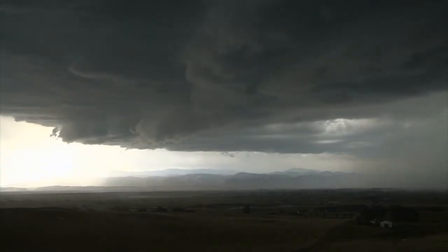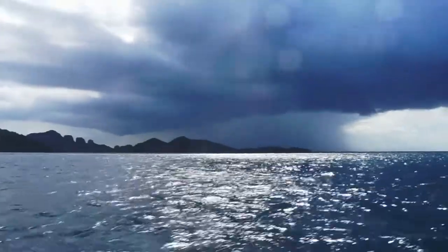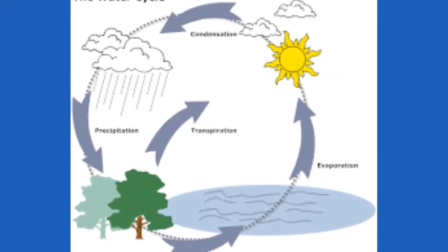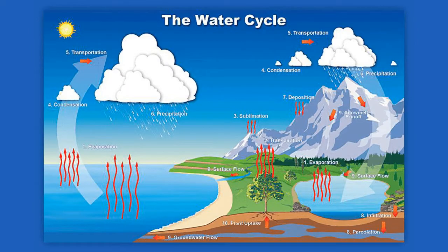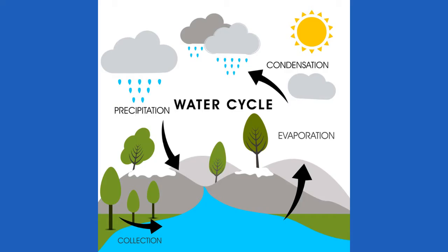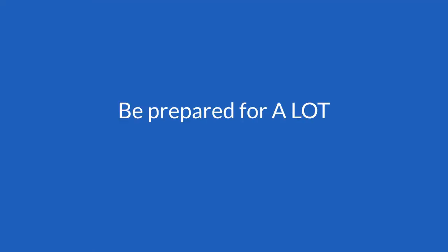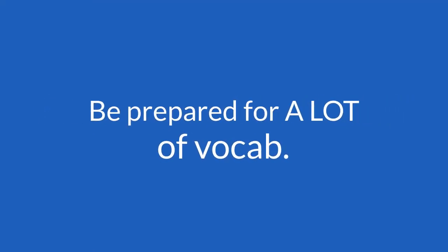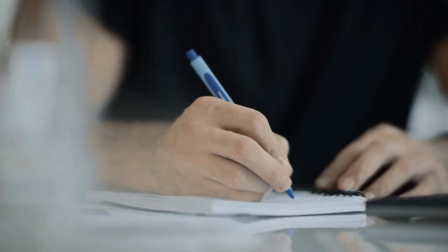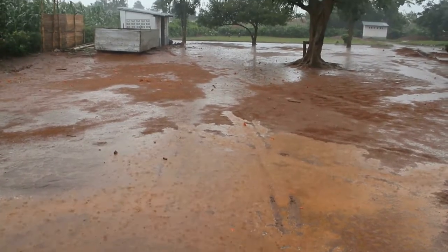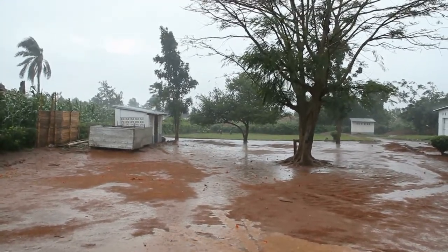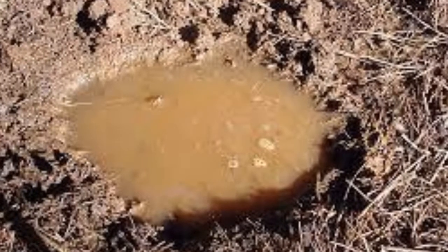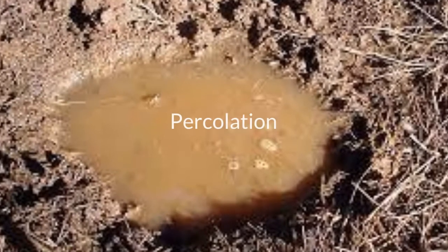Precipitation occurs over land and ocean. The simpler version has its merits, but the reality of the cycle is way more complex. These are not the only processes in the water cycle. Feel free to pause the video and write it down. Precipitation brings water down to the surface, and water can then move slowly through the pores in soil or permeable rock — a process called percolation.